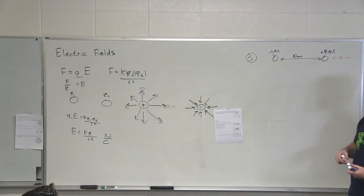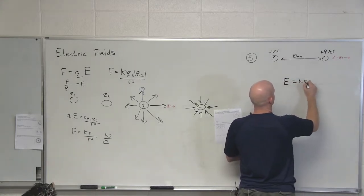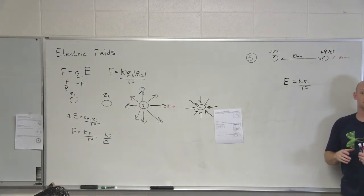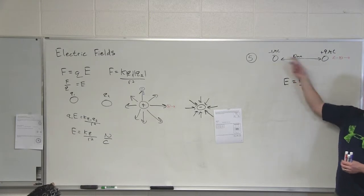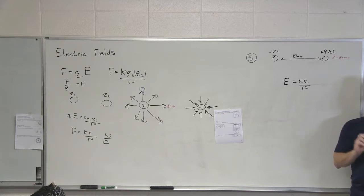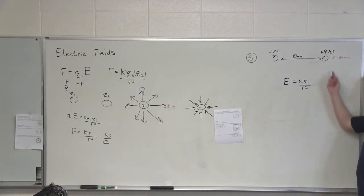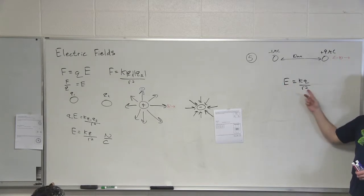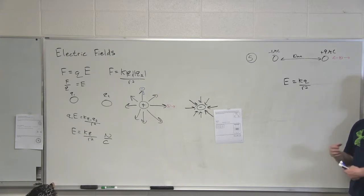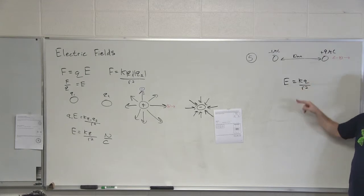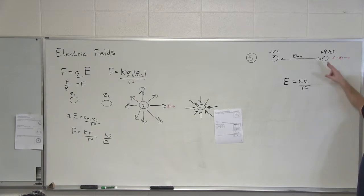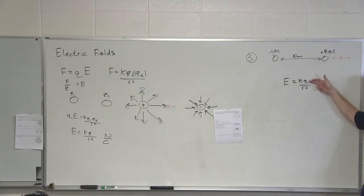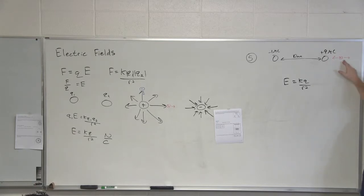What if we put a positive test charge to the right of the positive nine microcoulomb charge? The force due to the nine microcoulomb charge would be to the right, and the force due to the negative one microcoulomb would be to the left — so those are opposite, meaning the fields could potentially cancel. But the nine microcoulomb charge has the bigger Q, so it has the larger effect on the field based on charge alone. And it's also closer, so it has smaller R. He's got the larger magnitude charge and he's closer — he's going to have the larger electric field. So there's no way these cancel on the right side either.